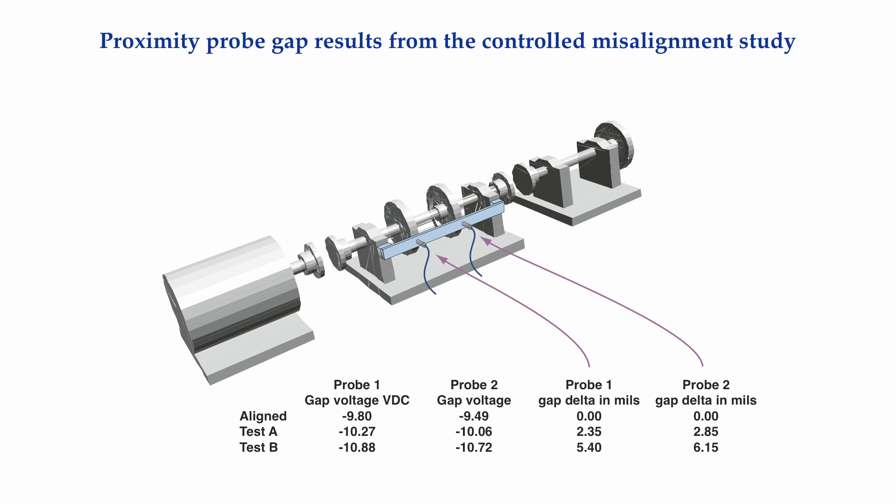For Test B with 62 mils of lateral misalignment, the gap voltage at probe 1 increased to -10.88 volts DC, and at probe 2 to -10.72 volts DC. The resulting gap change from well aligned to 62 mils of lateral misalignment at probe 1 was 5.4 mils, and at probe 2 was 6.15 mils, with the balance discs moving away from the probes. Now, how could this have happened if the shafts were not elastically bending? Also notice that the worse the misalignment got, the greater the elastic bending occurred in the center shaft.